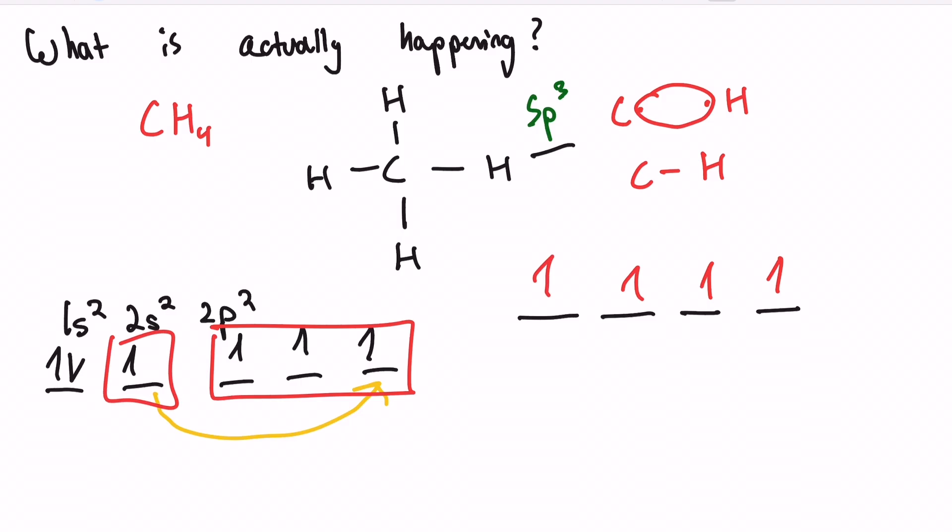So what is this right here? This is our sp3 hybridization. And what can we infer by looking at it? We have four lone spots where four different hydrogens could come in, give an electron, and we could form a bond.